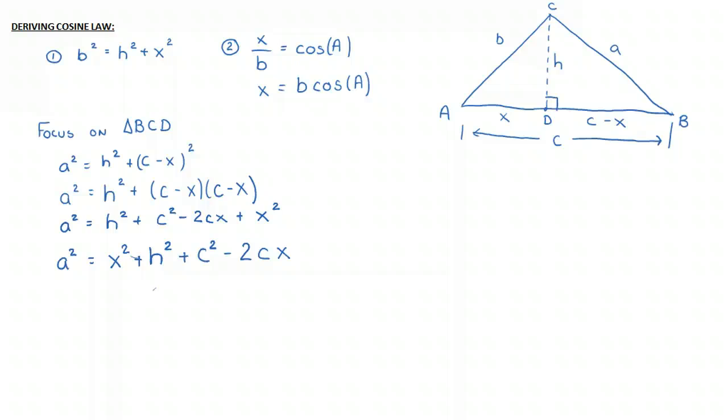So now what we want to do is we're starting to look a little bit like something useful. We need to get rid of this X squared. We need to get rid of this H squared. We need to get rid of this X. And that's where we go up and we use these two relationships we figured out earlier. So let's start with the X squared here.